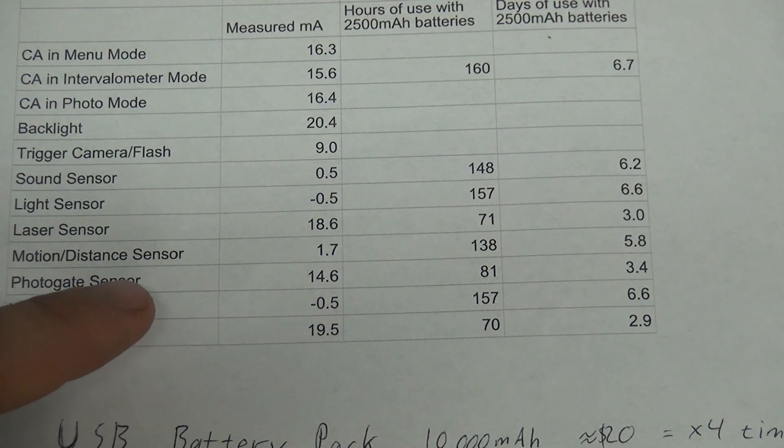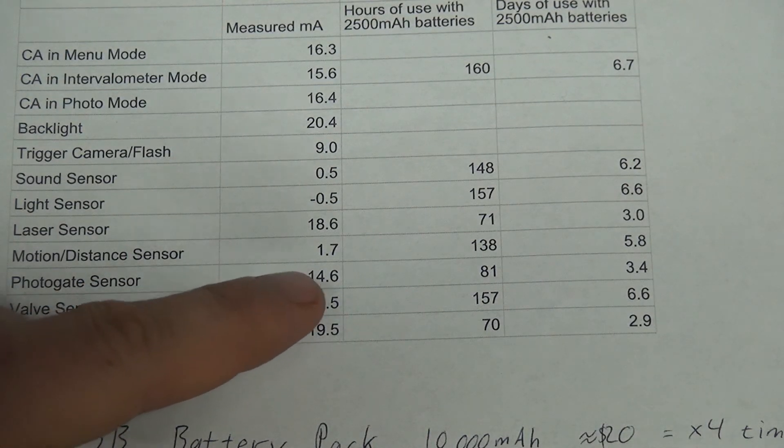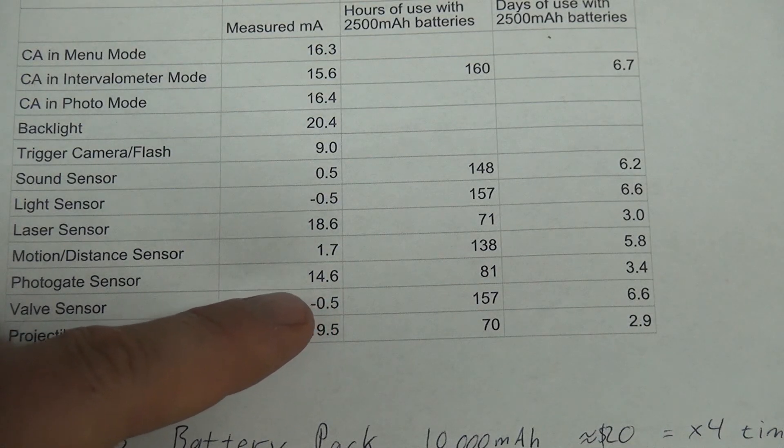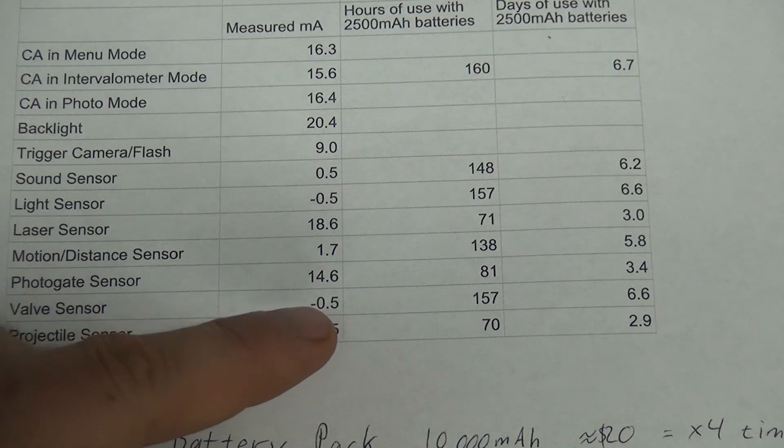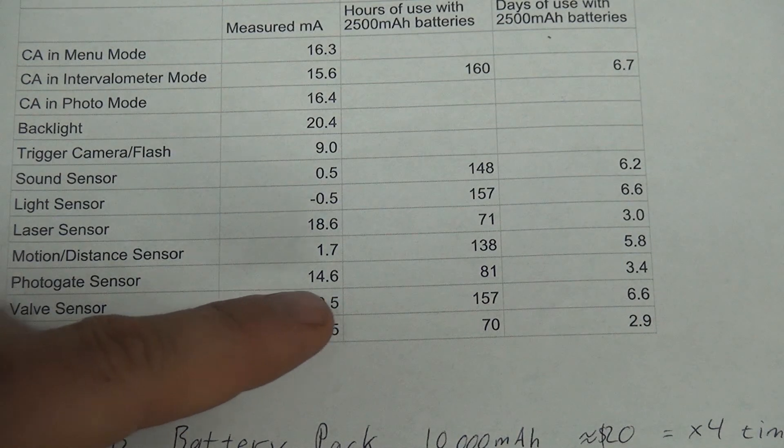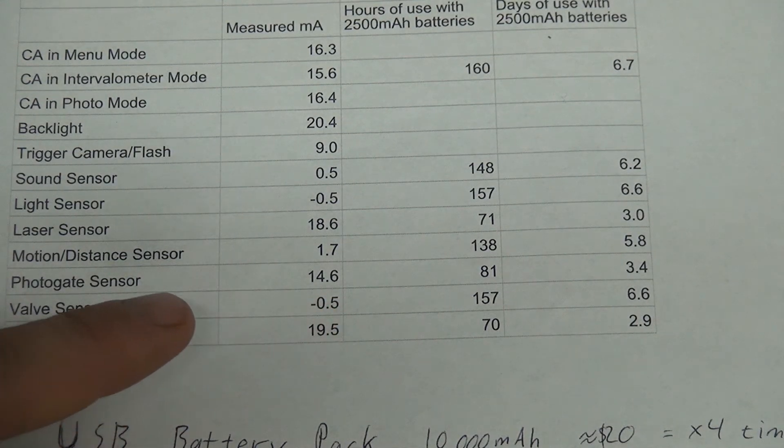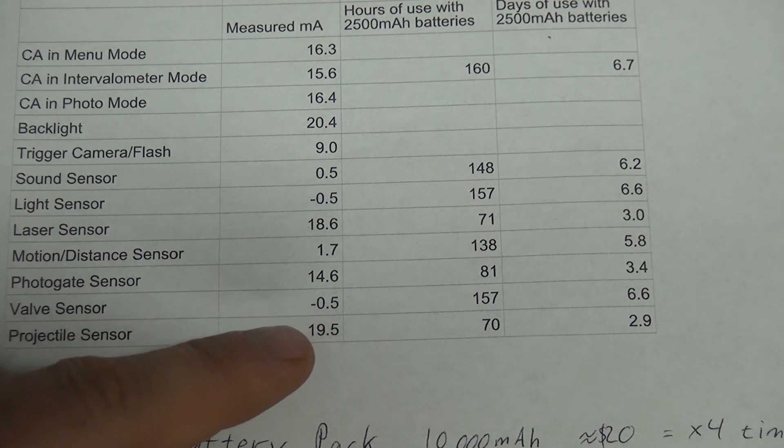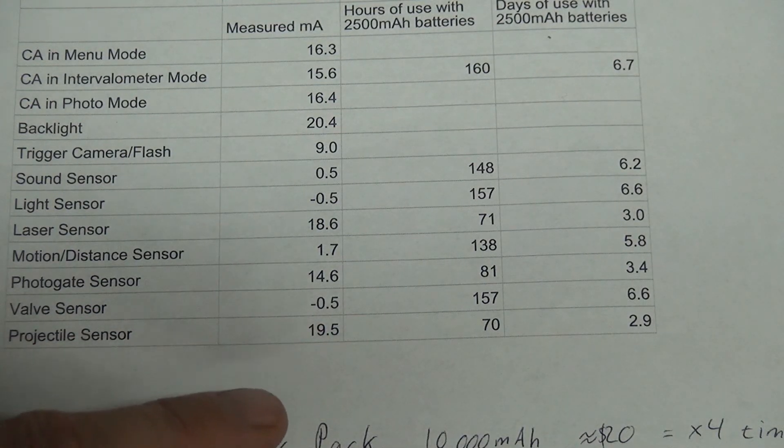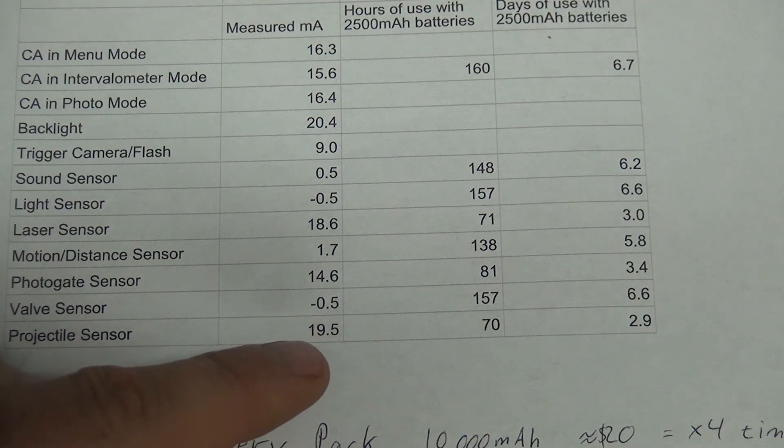You've got the motion and distance sensor. That's a pretty low current one, which is encouraging because that's used a lot of times in cases where you want to use not very much power. The photogate sensor uses a fair amount of power largely because of the LED in the sensor. The projectile sensor's got a number of LEDs. Also the photodiodes actually use quite a bit of power. Those Schmidt triggers that detect the bullets in flight are high power or decent power devices.